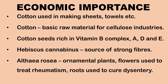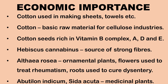Althaea rosea is an ornamental plant. The flowers are used to treat rheumatism and the roots are used to cure dysentery. Abutilon indica, Sida acuta, and Sida rhombifolia are medicinal plants.